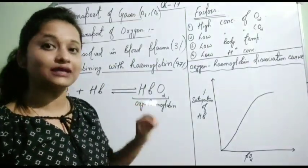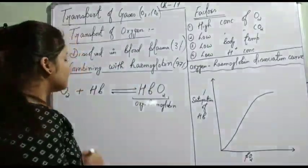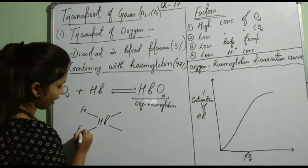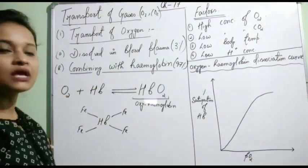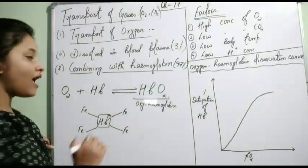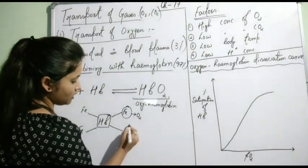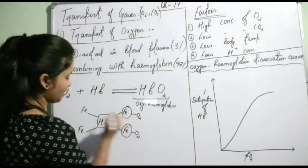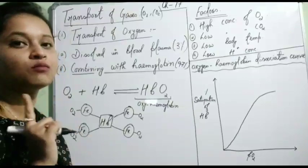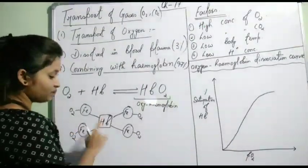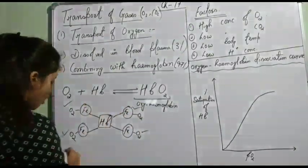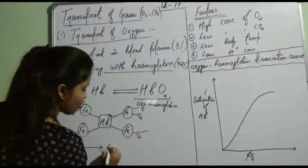97% of oxygen is transported by combining with hemoglobin. In one hemoglobin molecule there are four iron atoms (Fe). Each iron atom can bind with one oxygen molecule. So all four iron atoms can each bind with one oxygen molecule. Therefore, one hemoglobin molecule is able to bind with four oxygen molecules.